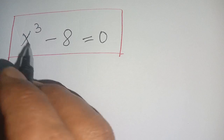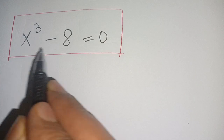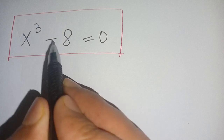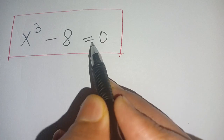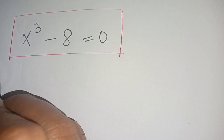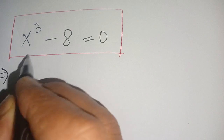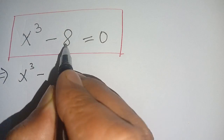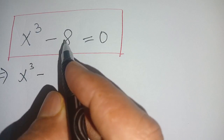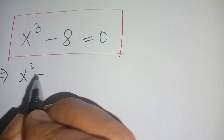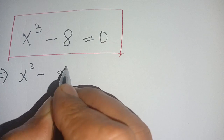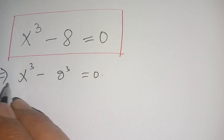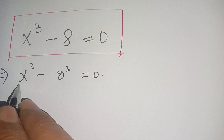Hello everyone. In today's video we are going to solve this exponential equation: x cubed minus 8 is equal to 0. Let us solve this. We can write this as x cubed minus, which can be written in terms of the cube of 2, so we write this as 2 cubed, equal to 0.